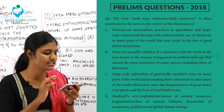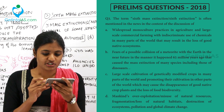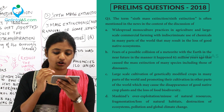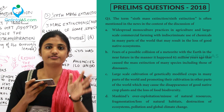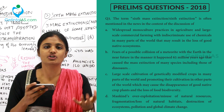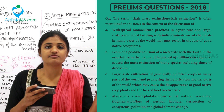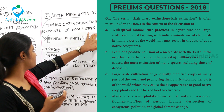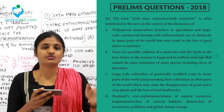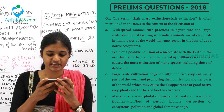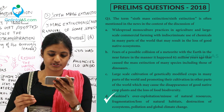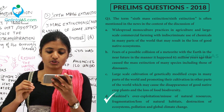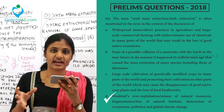Moving to the third question: the term 'sixth mass extinction' is often mentioned in the news in the context of what? We already know about the five mass extinctions that happened earlier — the mass removal of species from the Earth. The sixth mass extinction is related to human activities: mankind's over-exploitation and misuse of natural resources, fragmentation and loss of natural habitat, destruction of ecosystems, pollution, and global climate change.